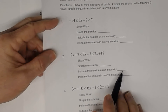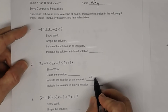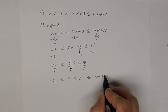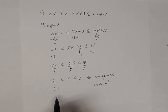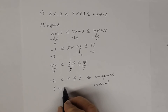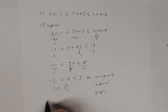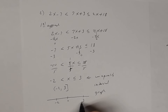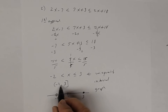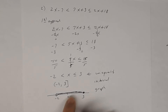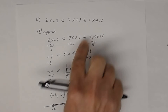The inequality notation is negative 2 < x ≤ 3. For the interval notation: parenthesis negative 2, comma 3, bracket — going from left to right, smallest to largest. For the graph: open circle at negative 2, closed circle at 3, shade everything between them. Any real number between negative 2 and 3, including 3 but not negative 2, is a solution.